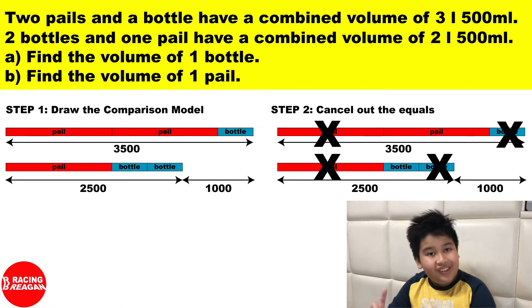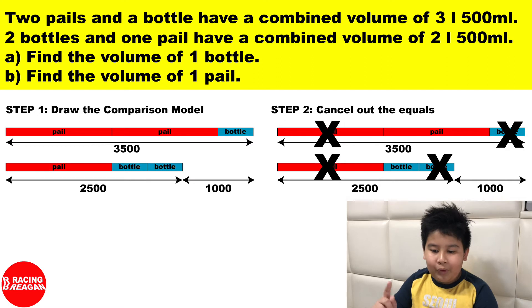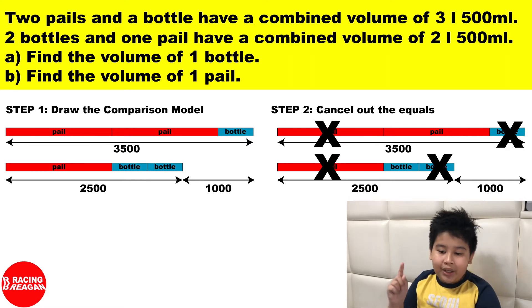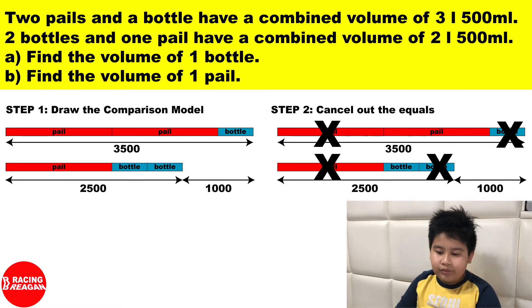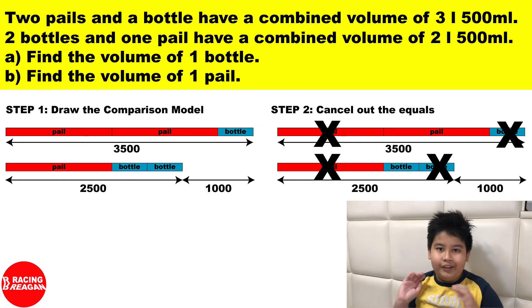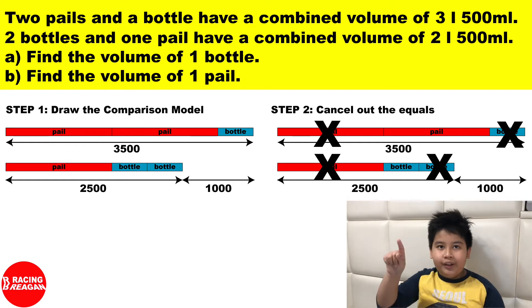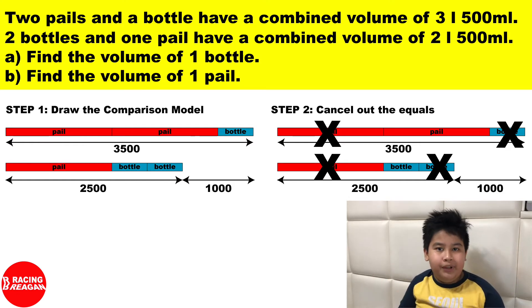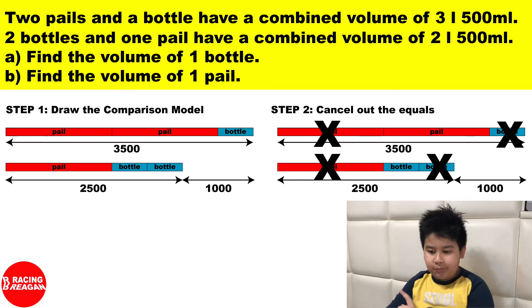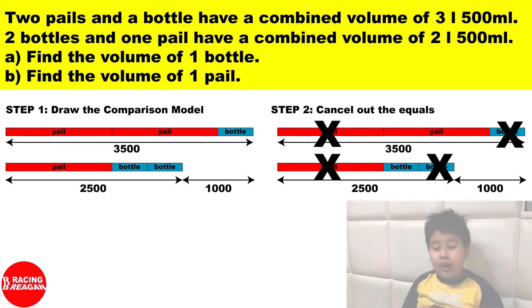To cancel out the equal parts: cancel out one pill from the first model and one pill from the second model. Do not erase anything — just cancel out with an X, as if you're marking a paper. Then cancel out one bottle from the first model and one bottle from the second model.